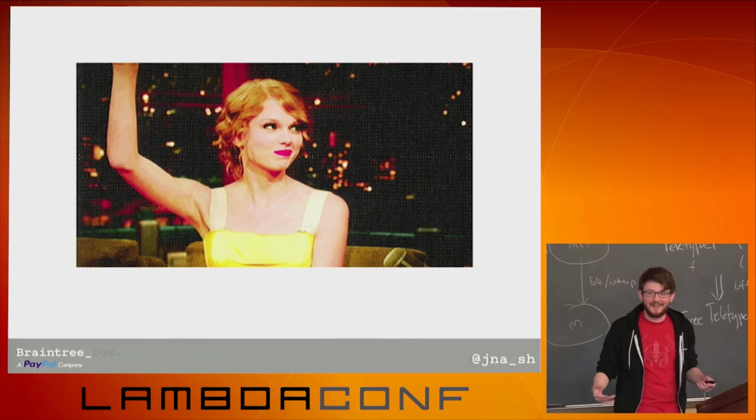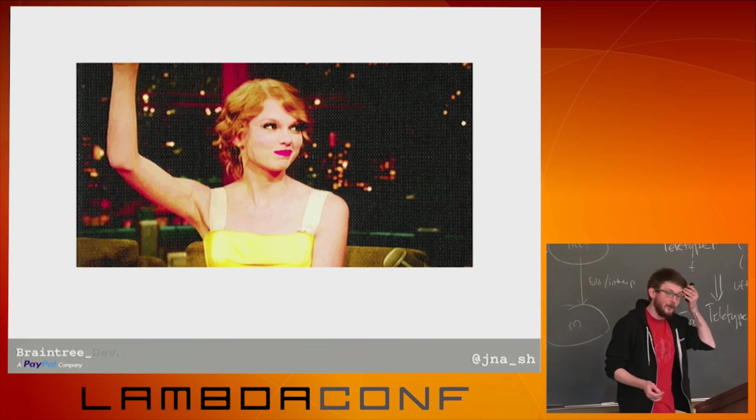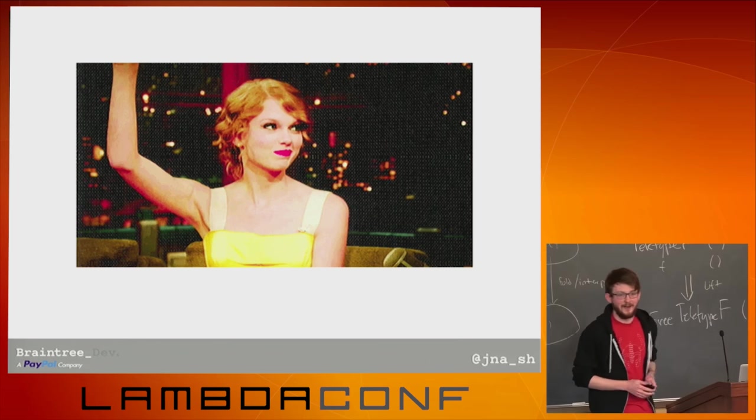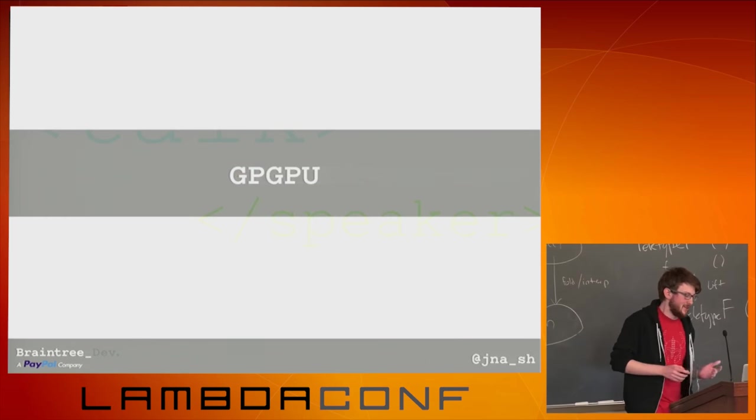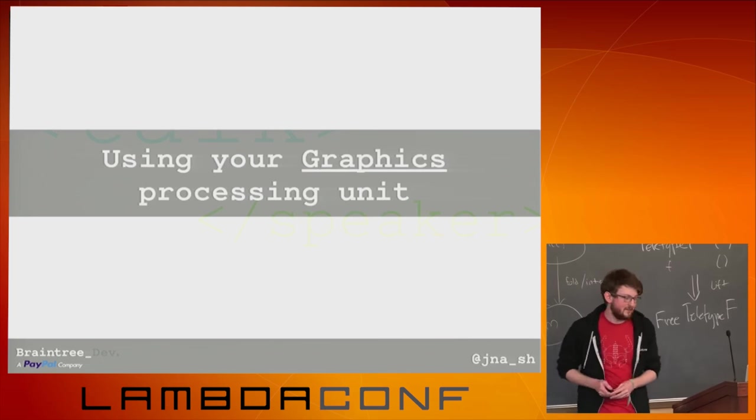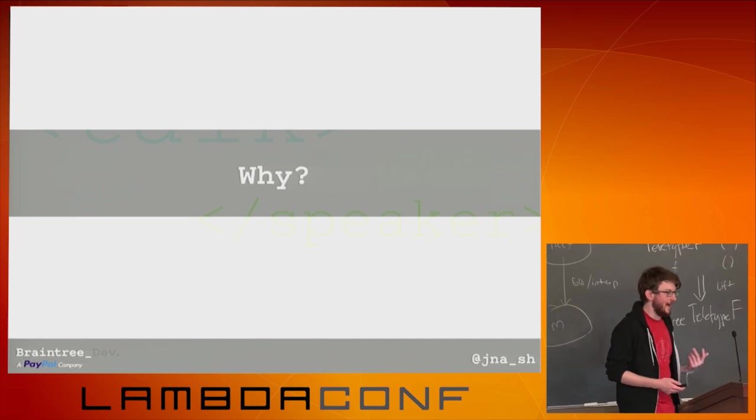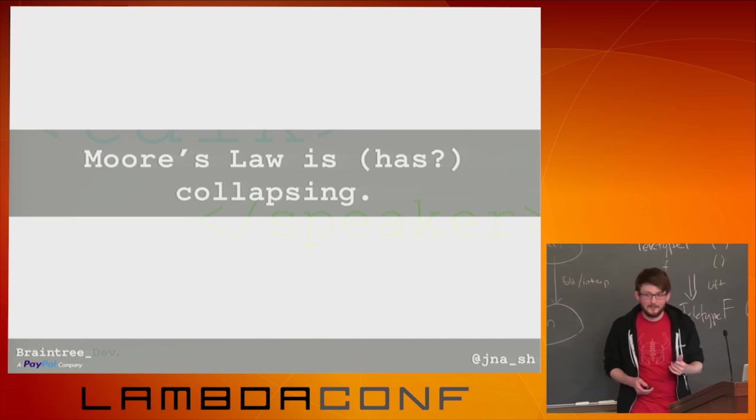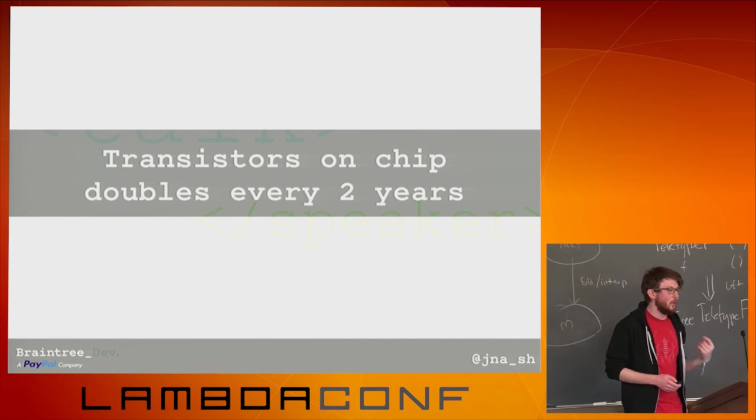Has anyone done any GPGPU in Haskell already? Okay, cool. So, you're my wingman, if I say anything stupid, you've got to call it out, alright? So, GPGPU, using the graphic processing unit for more than just graphics. Why would we do something like that? We would do that because Moore's Law is failing, or depending on how controversial we're feeling, has already failed.